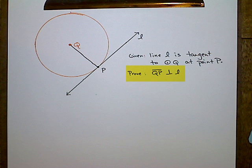And to do this, we're going to use something called an indirect proof. Indirect proofs are a little funky because you have to temporarily assume that whatever you're trying to prove is wrong, and that the opposite is true.